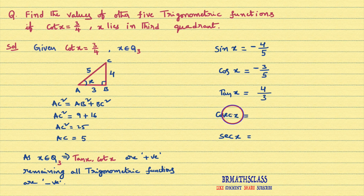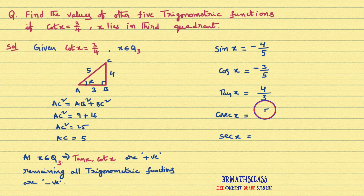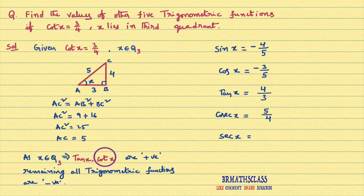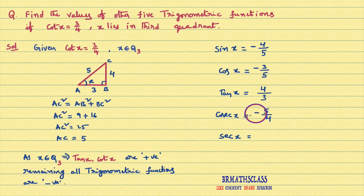Cosecant x is defined as hypotenuse divided by opposite side. Hypotenuse is 5 divided by opposite side 4. In the third quadrant, tan x and cot x are the only positive functions, so cosecant x is negative. Therefore, cosecant x equals minus 5 by 4.